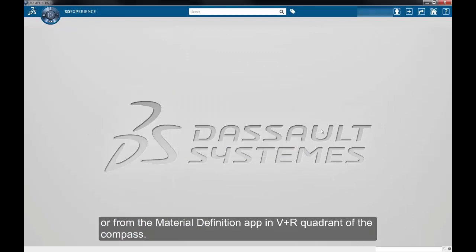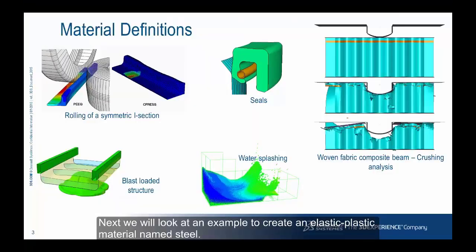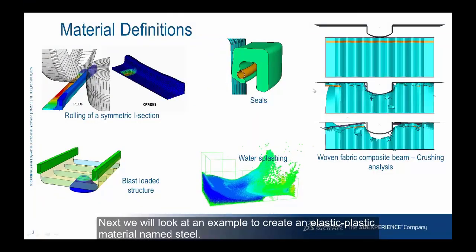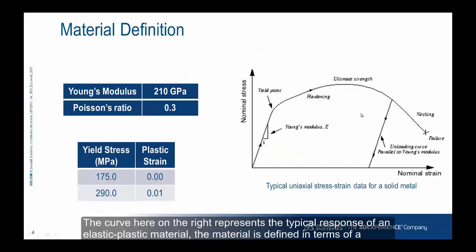Next, we will look at an example to create an elastic-plastic material named steel. The curve here on the right schematically represents the typical response of an elastic-plastic material.